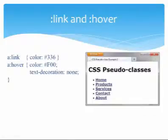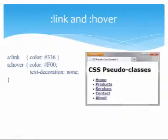Next, the Hover pseudo-class, coded as "a:hover", configures the way that hyperlinks look when the user places the mouse pointer over them. In this case, the hover configures red text and no underline.